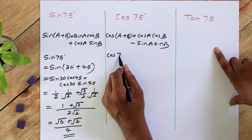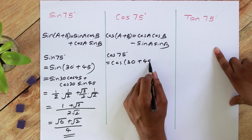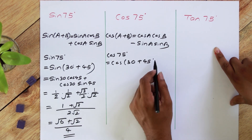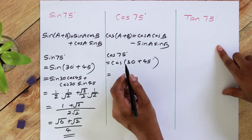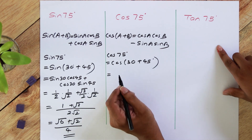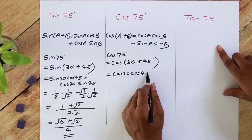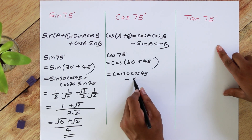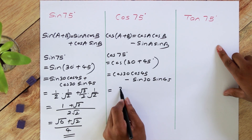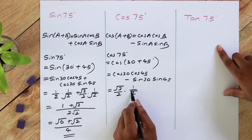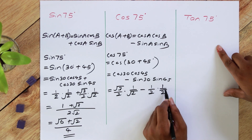Considering cos 75, we can write cos(30 plus 45). Applying cos(A+B): instead of A, 30 is there; instead of B, 45 is there. So we write cos 30 cos 45 minus sin 30 sin 45, which is root 3 over 2 times 1 over root 2, minus 1/2 times 1 over root 2.